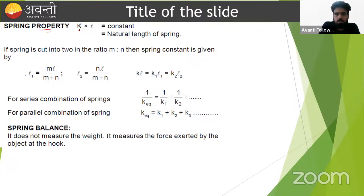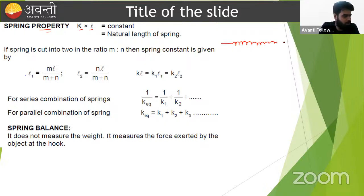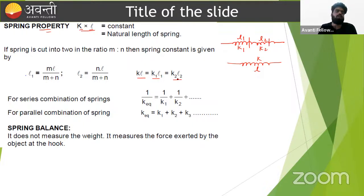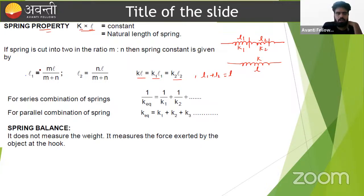Spring property: spring constant K times length L is always constant. If a spring of length L and spring constant K is broken into two parts of lengths L1 and L2, then K1 L1 = K2 L2 = KL. Using this with L1 + L2 = L, we can find K1 and K2. For springs in series and parallel combinations, the equivalent spring constant can be calculated. In a constrained system, if two bodies are in contact, their velocities at the common surface are equal, meaning relative velocity at the contact surface is zero.